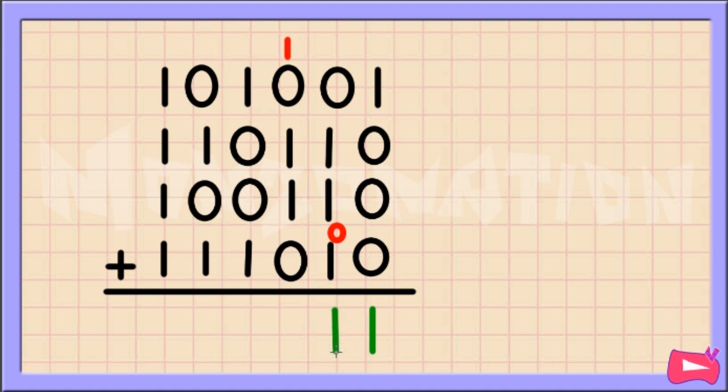0 plus 1 is just 1. The third column, 1 plus 0 equals 1. Plus 1 equals 0. Carry 1.